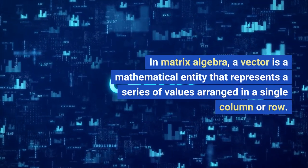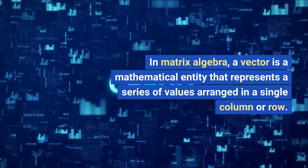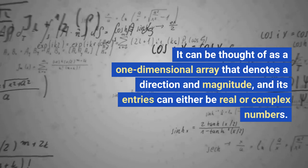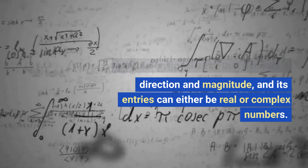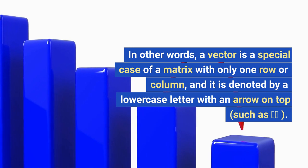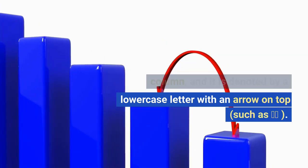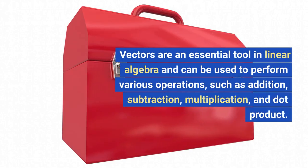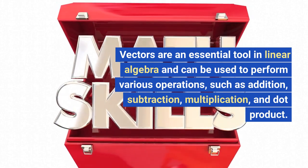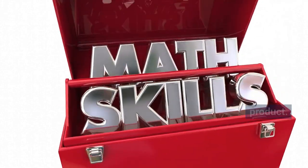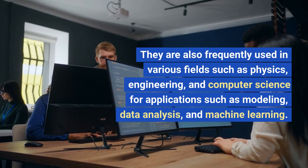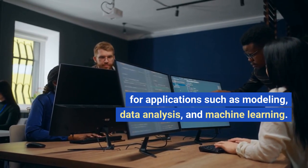In matrix algebra, a vector is a mathematical entity that represents a series of values arranged in a single column or row. It can be thought of as a one-dimensional array that denotes a direction and magnitude, with entries that can be real or complex numbers. A vector is a special case of a matrix with only one row or column, and is denoted by a lowercase letter with an arrow on top, such as V. Vectors are used to perform operations such as addition, subtraction, multiplication, and dot product, and are frequently used in physics, engineering, and computer science for modeling, data analysis, and machine learning.